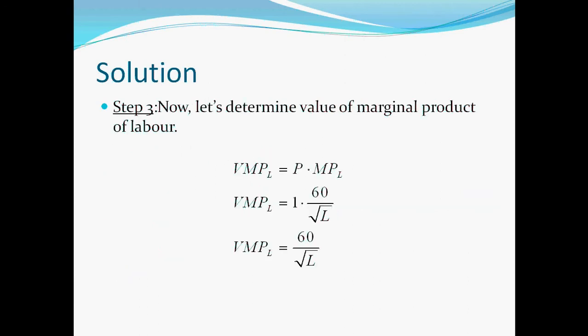Now let's determine the value of marginal product of labor. It is simply marginal product of labor multiplied by price of the output. Now it is really easy because price of the output is only 1 dollar per unit. So we should multiply it by just 1.